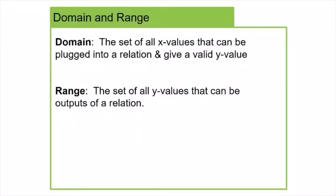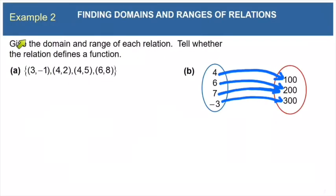Now let's talk about domain and range. These are not really difficult concepts to understand, although it does take some practice. Domain is just the set of all x values that can be plugged into a relation that will give you a valid y value. The range is just the set of all the y values that you can get from that relation. So again, domain is the x values, and range is the y values. So let's look at example 2 together.